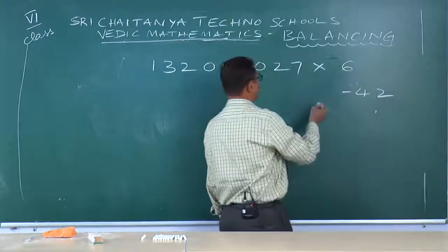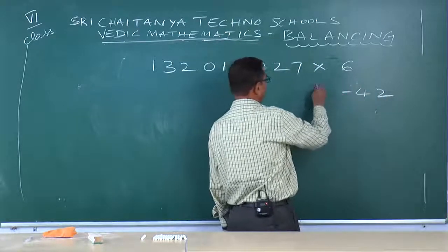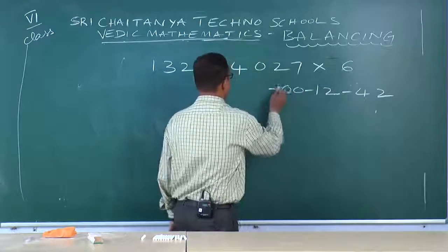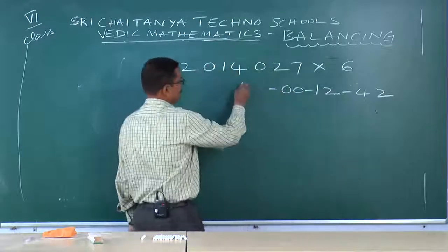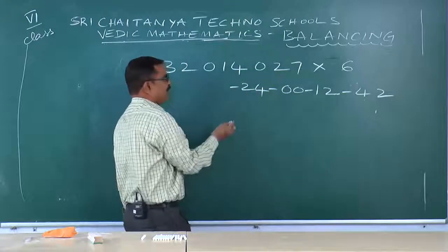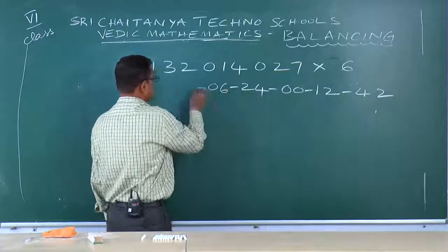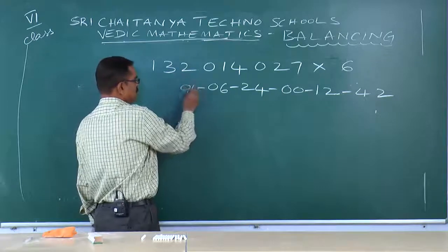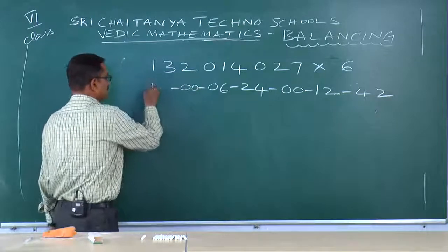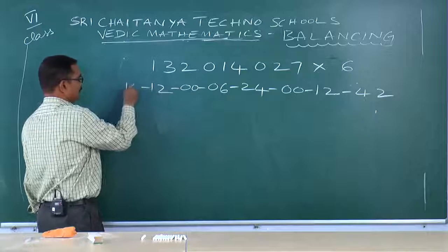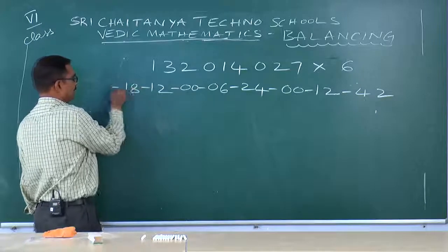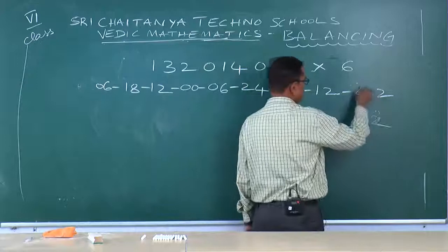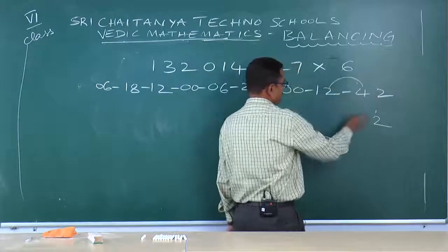6 into 7: 42. 6 into 2: 12. 6 into 0: 0, 0. 6 into 4: 24. 6 into 1: 0, 6. 6 into 0: 0, 0. 6 into 2, 5; 6 into 4; 6 into 2: 12. 6 into 3: 18. 6 into 6. 2 comes out, 6.